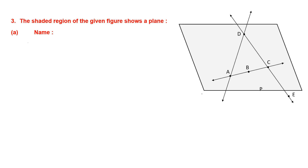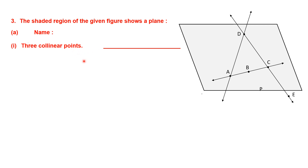Question three. The shaded region of the given figure shows a plane. This is slightly shaded so you can see the lines clearly. We have to name a few things. Name three collinear points — collinear points are three or more points lying on the same straight line. Looking at points A, B, C, D, P (for the plane), and E — points A, B, and C are three collinear points.